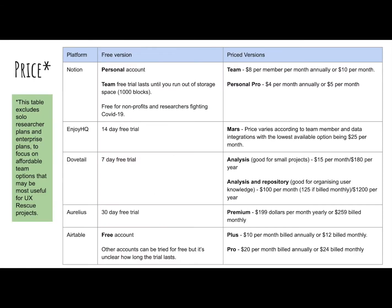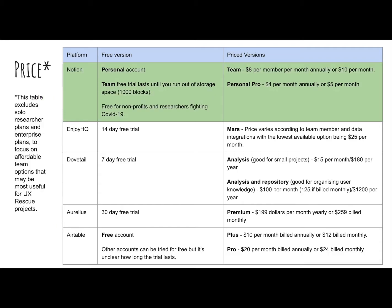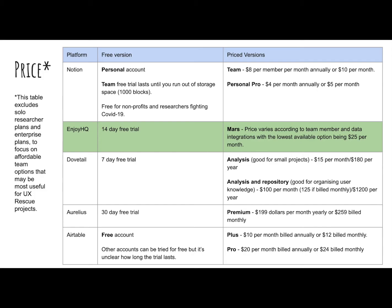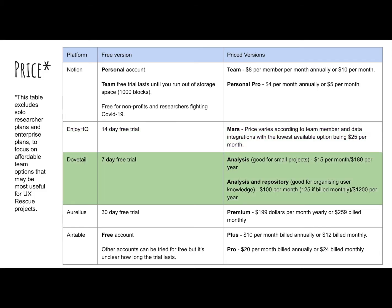Now, let's have a look at price. Airtable and Notion have plan options that are completely free, but the functionality of all the platforms changes with price. Notion's collaboration options improve from a limit of five unique guests on the personal plan to a collaborative workspace where you pay per member added. Similarly, EnjoyHQ's pricing also increases according to team members added to the plan. Dovetail's contributor and collaboration options also improve with price, and so do the number of transcription hours.